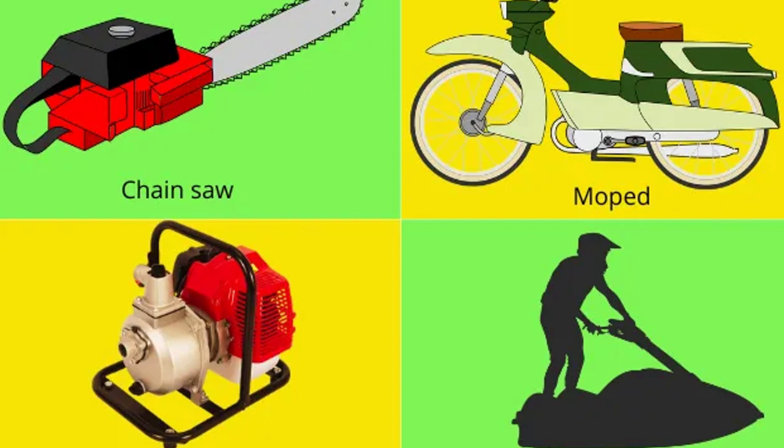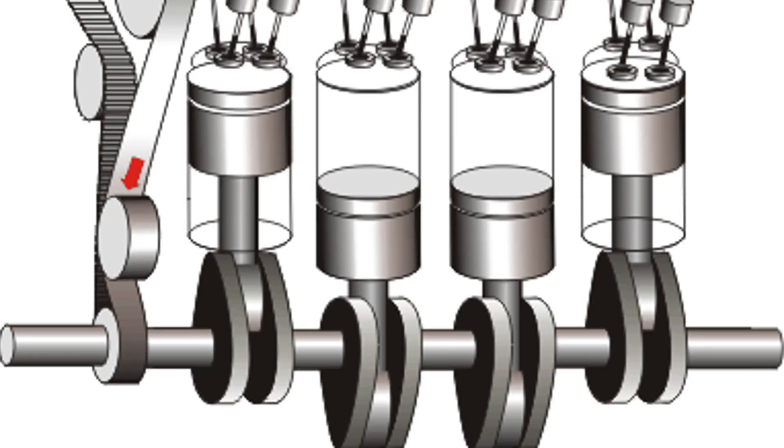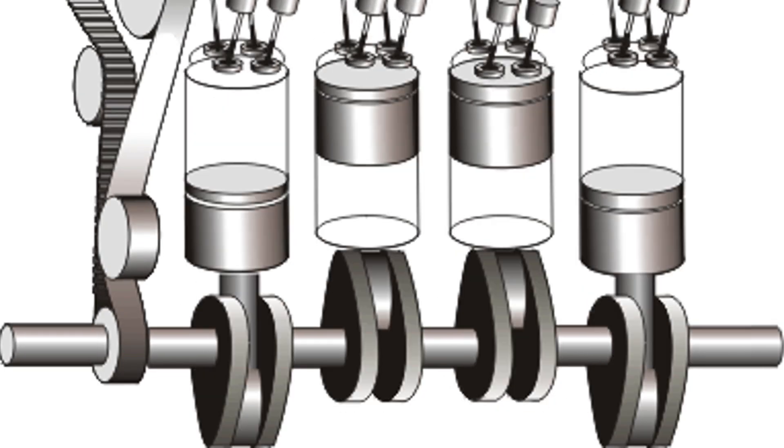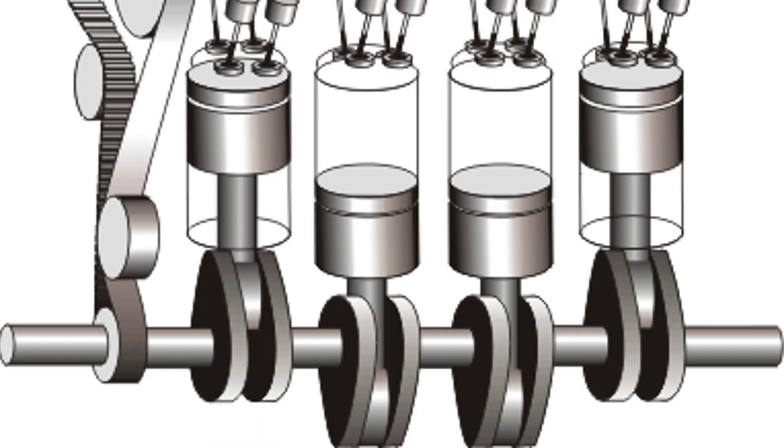On the other hand, a four-stroke engine takes four movements of the piston to complete the same cycle. First, it takes in air and fuel as the piston moves down. Then it compresses that mixture as the piston goes up.